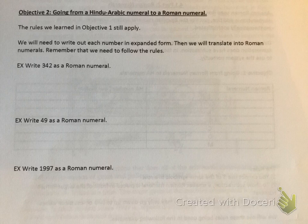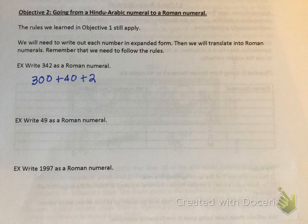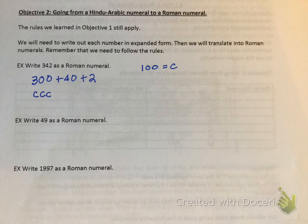Objective 2: Going from Hindu-Arabic numerals to Roman numerals. The rules we learned in Objective 1 still apply. We will need to write out each number in expanded form, then we will translate into Roman numerals. Remember that we need to follow the rules. When I say expanded form, I don't have to do 10 to the second, 10 to the first, et cetera. But what I am going to write out is the value. So I have 300 plus 40 plus 2.